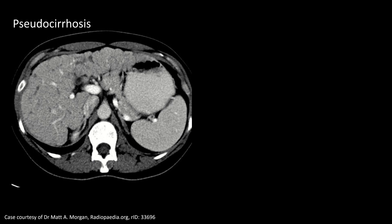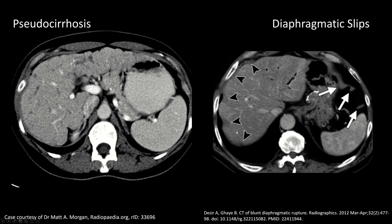Usually you're going to be looking at this in the context of a patient with known cancer and known treated metastases. Diaphragmatic slips are normal bundles of diaphragm muscle that can be prominent in some patients and can mimic nodularity. The arrows here point to prominent diaphragmatic slips that make the surface of the liver look nodular — but that's not actual nodularity of the liver. That can be a pitfall on CT if you're not aware of them.